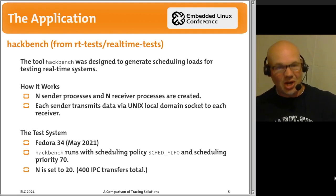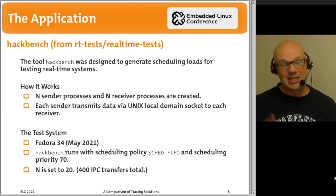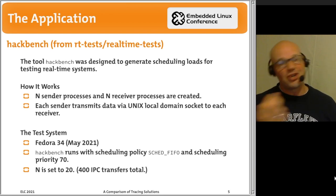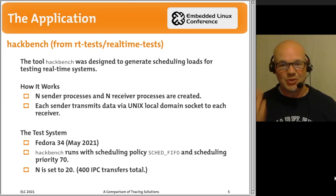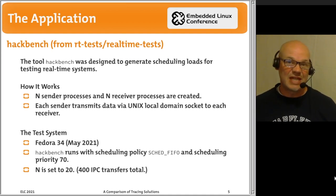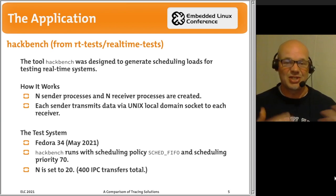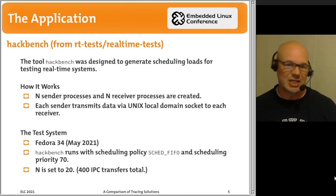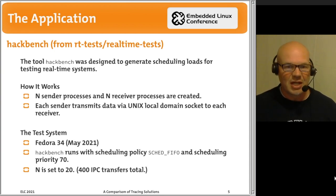The test system was Fedora Linux version 34, the only distribution that supported all features of all four tracing solutions — so it was the obvious choice. I ran Hackbench with real-time priority policy SCHED-FIFO at priority 70, to minimize noise from other system activity. I used N=20, giving 20 senders and 20 receivers, resulting in 400 inter-process communication activities during the test.